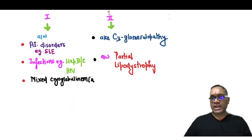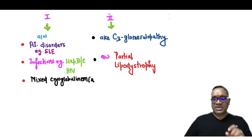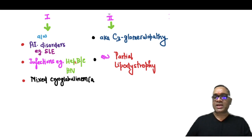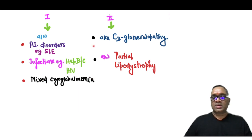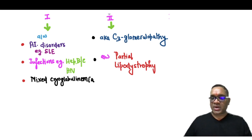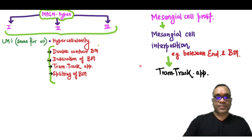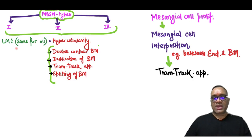MPGN type 1 is associated with autoimmune disorders like SLE, infections like Hepatitis B, C, and HIV, and is commonly associated with mixed cryoglobulinemia. MPGN type 2 is also known as C3 glomerulopathy and is associated with partial lipodystrophy.